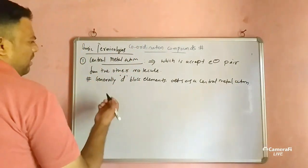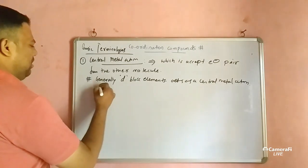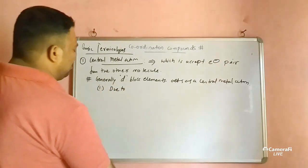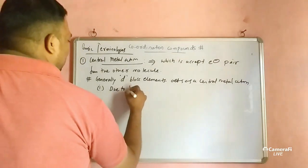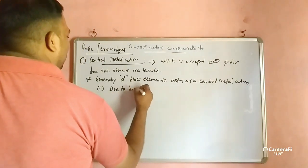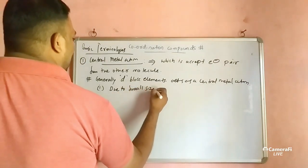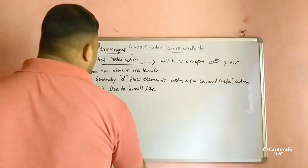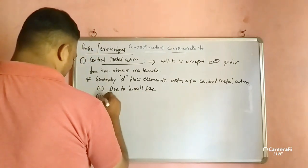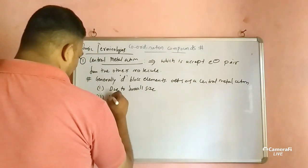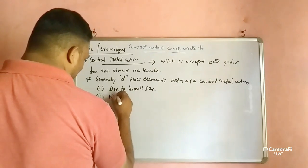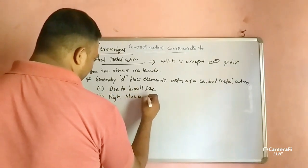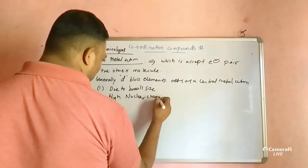Why do d-block elements act as central metal atoms? The reasons are: due to small size and high nuclear charge.